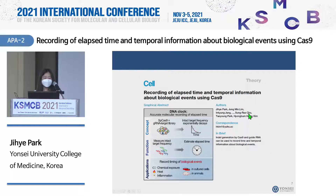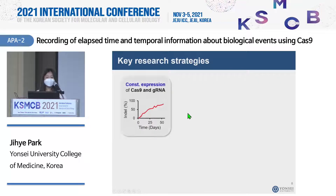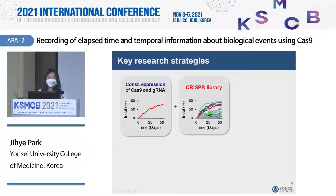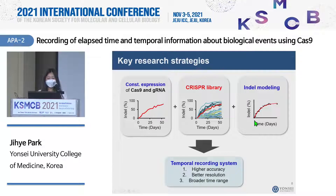Our work was summarized and reported in the journal Cell this year. For this work we utilized three strategies. First is the constant expression level of Cas9 and guide RNA — we did this to keep the indel rate constant at all times. Second, we adopted the CRISPR library concept, using thousands of different guide RNAs and target sequences to increase the accuracy of our recording system. Third, based on our high-throughput indel frequency data, we derived a model to express indel frequency as a function of time so we can mathematically calculate the predicted time value.